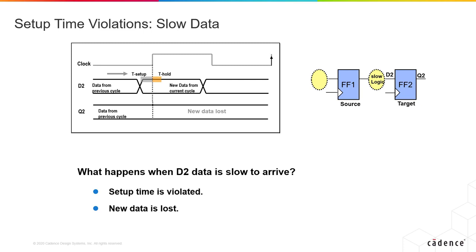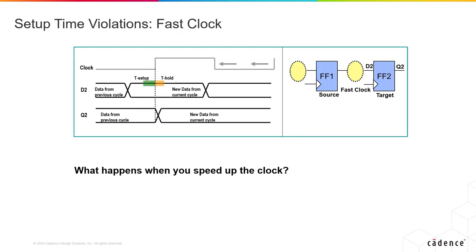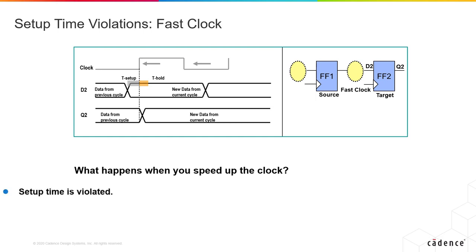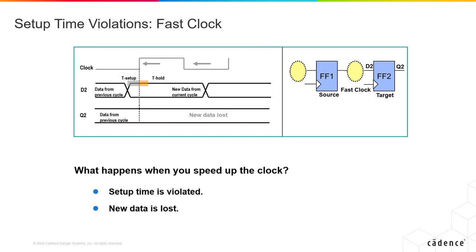To avoid that situation, the data must arrive in time — the minimum setup check must be met for the data to be properly stored in the capture flop. When you have a really fast clock or when you speed up your clock, your setup time is violated because now the data becomes slower compared to your clock. The new data is actually lost. For good functioning circuitry, your clock cannot be too fast compared to your data.